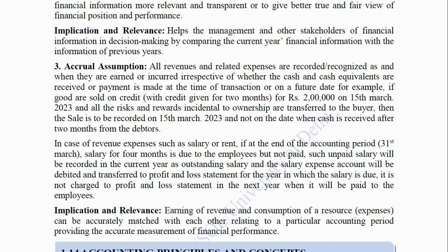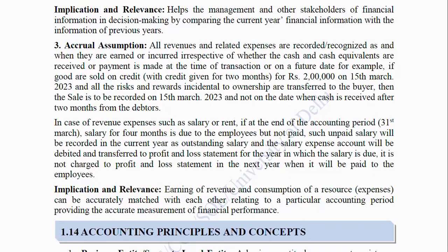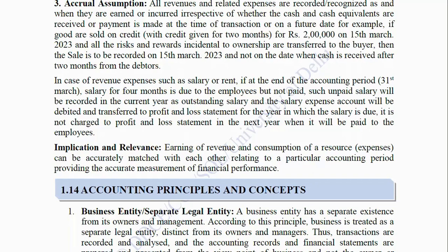In case of revenue expenses such as salary or rent, if at the end of the accounting period (31st March), salary for 4 months is due to employees but not paid, such unpaid salary will be recorded in the current year as outstanding salary — the salary expense account will be debited and transferred to the profit and loss statement for the year in which the salary is due. It is not charged to profit and loss in the next year when it will be paid. Implication: Earning of revenue and consumption of a resource (expenses) can be accurately matched with each other relating to a particular accounting period, providing accurate measurement of financial performance.